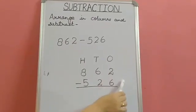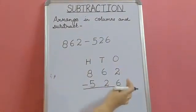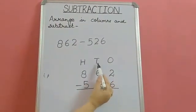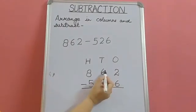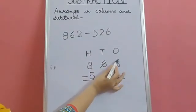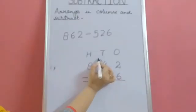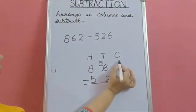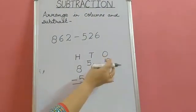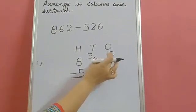Now starting from the ones column. 2 minus 6. This is not possible. If we have 2 candies, we cannot give 6 candies. So again we will go to the next column. This is the tens column and we will ask for 1. We had 6 tens. We will borrow 1 ten from here and give it to the ones column. And this 6 will become 5. And this 2 will become 12. 1 ten from here moves to the ones column and becomes 10 ones. 10 ones plus 2 ones will become 12.